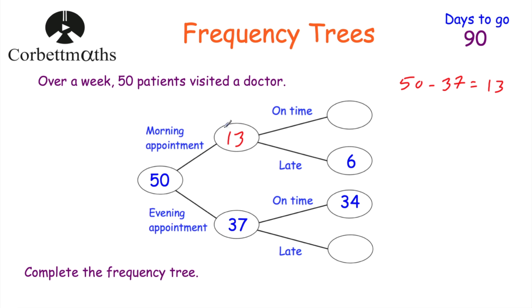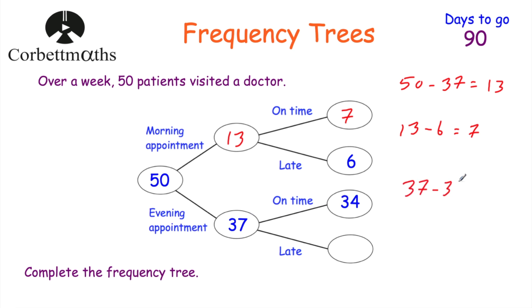In terms of the morning appointments, there are 13 people that went to morning appointments and 6 of them were late. That means the rest were on time. So if we do 13 take away 6, that's equal to 7 - so 7 were on time and 6 were late. In terms of the evening appointments, 34 of them were on time and the rest were late. There are 37 altogether so 37 take away 34 equals 3, meaning 3 of them were late. And that's our Frequency Tree.